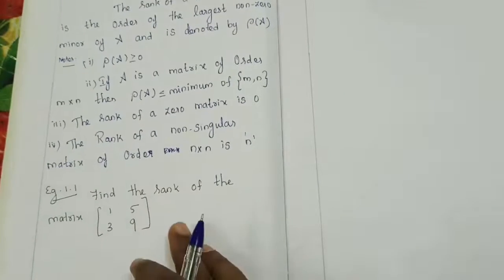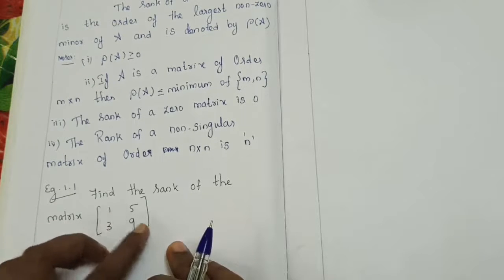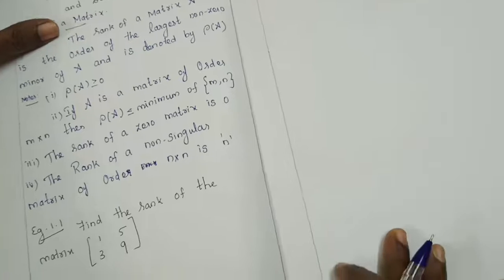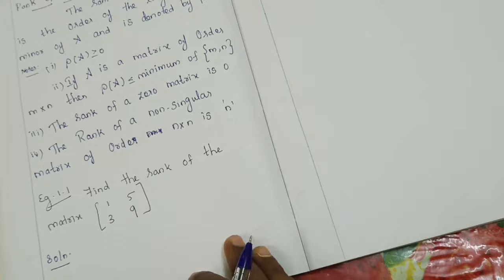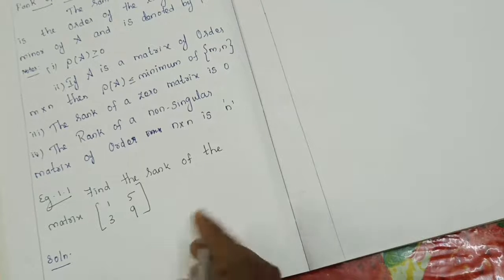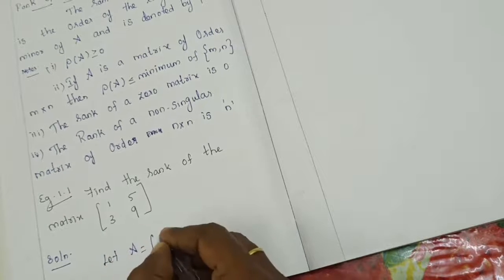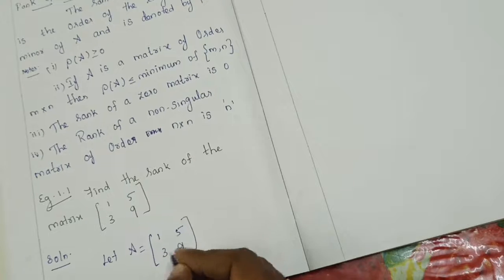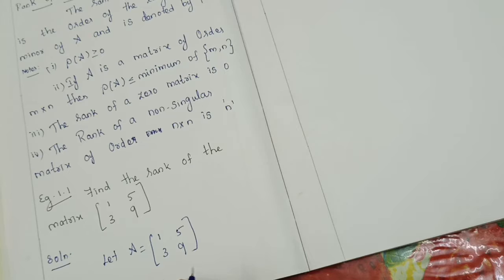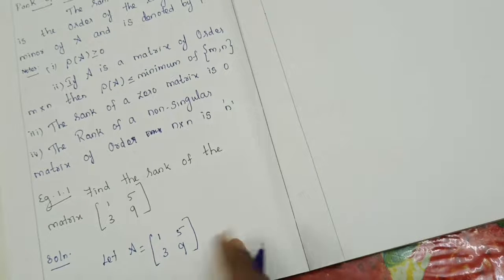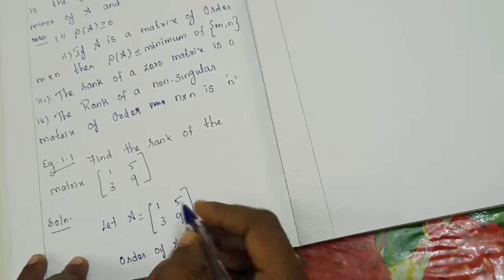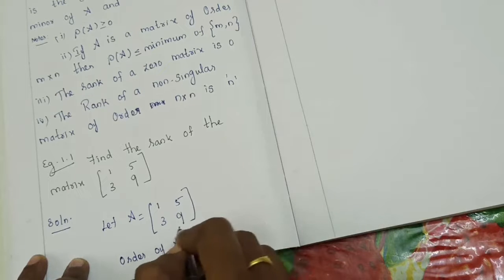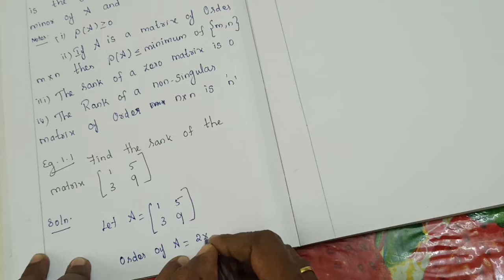These are the four notes and the definition of rank of a matrix. We will move to example 1.1. The question is: find the rank of the matrix 1, 5, 3, 9. Let A equal to this matrix. The order of A is 2 cross 2, so rho of A must be less than or equal to 2. The answer will be either 2 or 1.